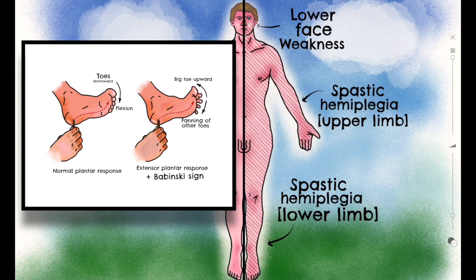In the normal reflex pathway, the stimulus is received on the S1 dermatome and travels up the tibial nerve to synapse in the anterior horn of the spinal cord, resulting in efferent fibers traveling down the tibial nerve to elicit the appropriate motor response. However, if there is damage to the normal descending control of the plantar reflex, the suppression of extension withdrawal through the deep peroneal nerve is lost and the toes instead extend upwards.